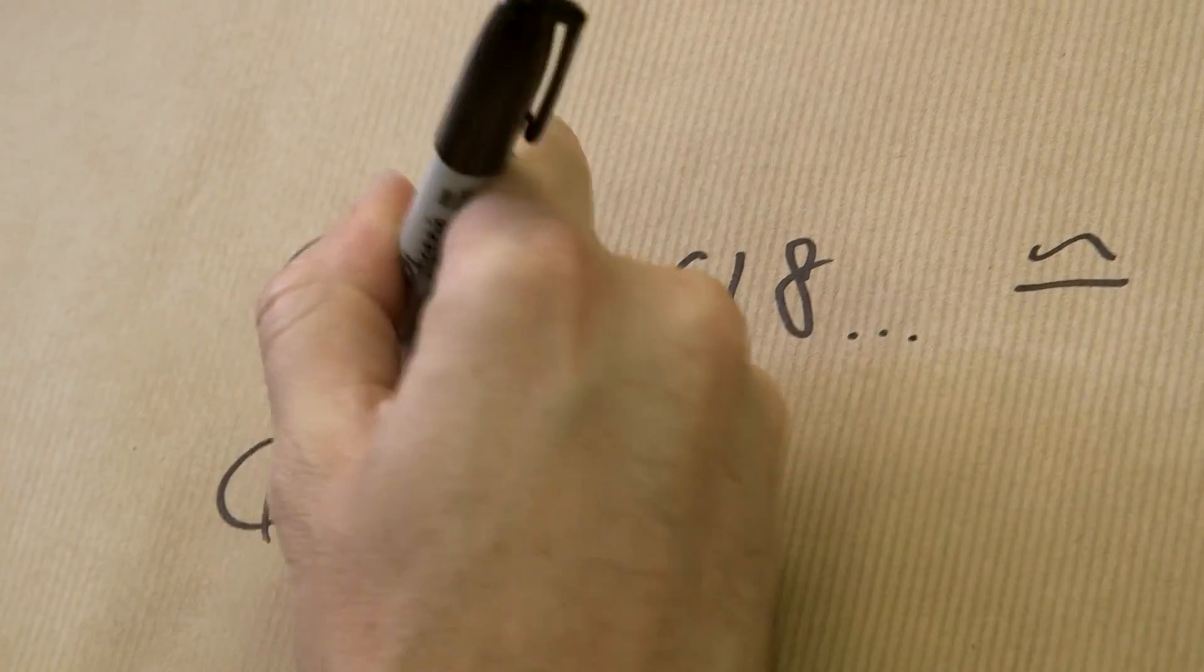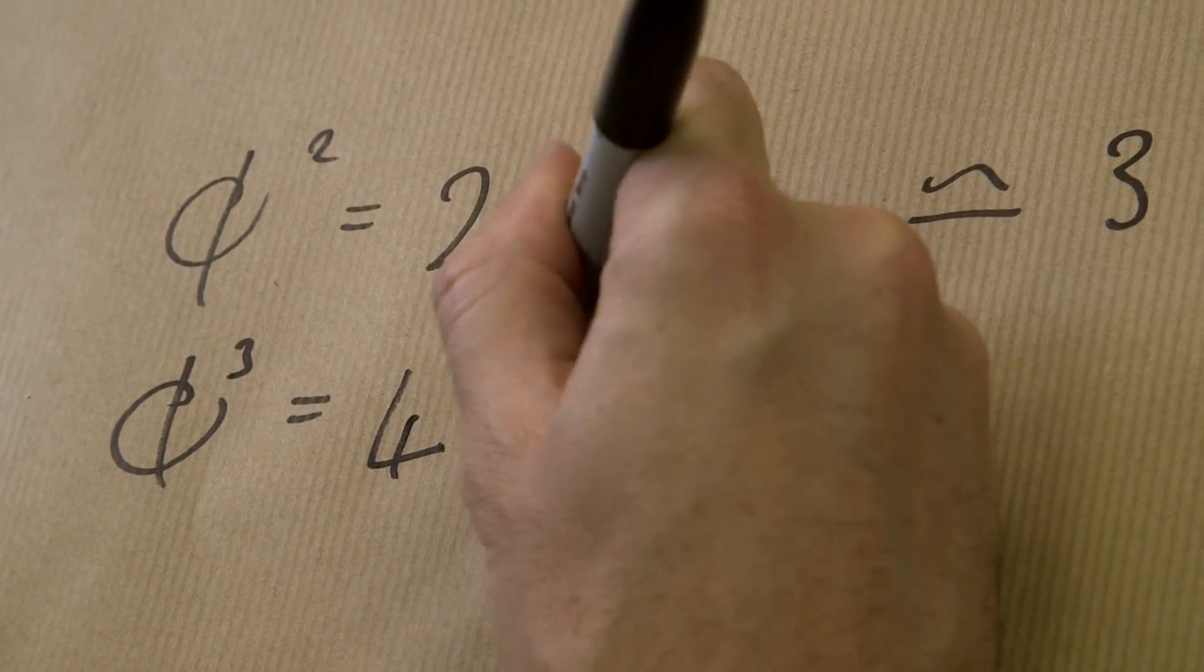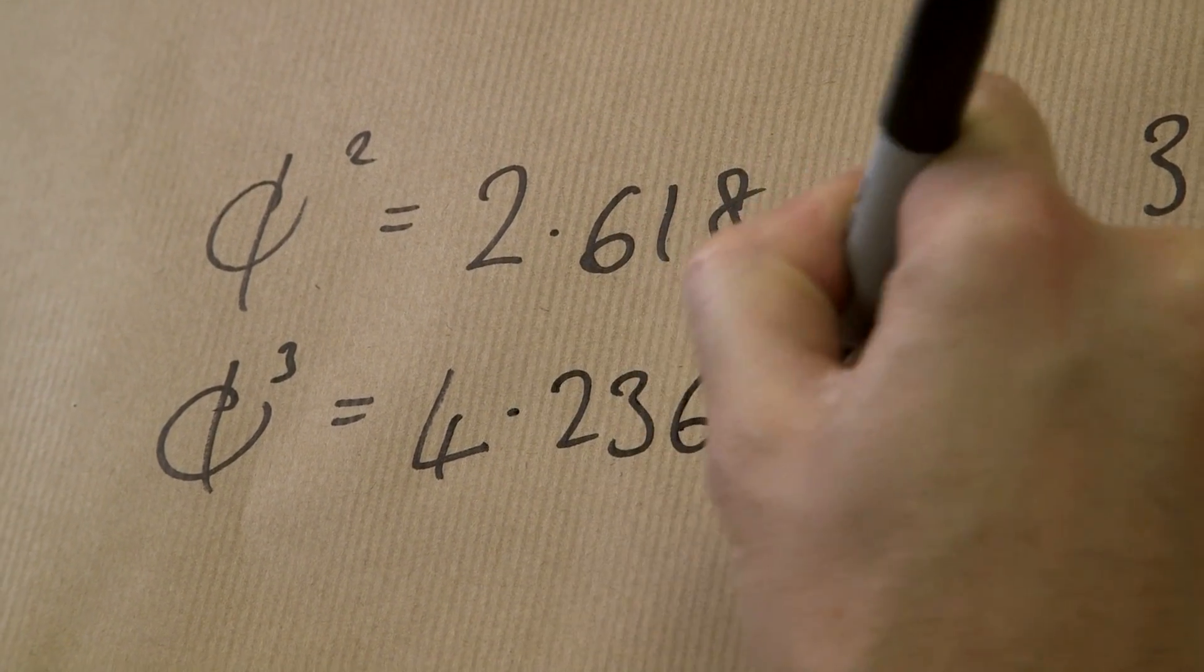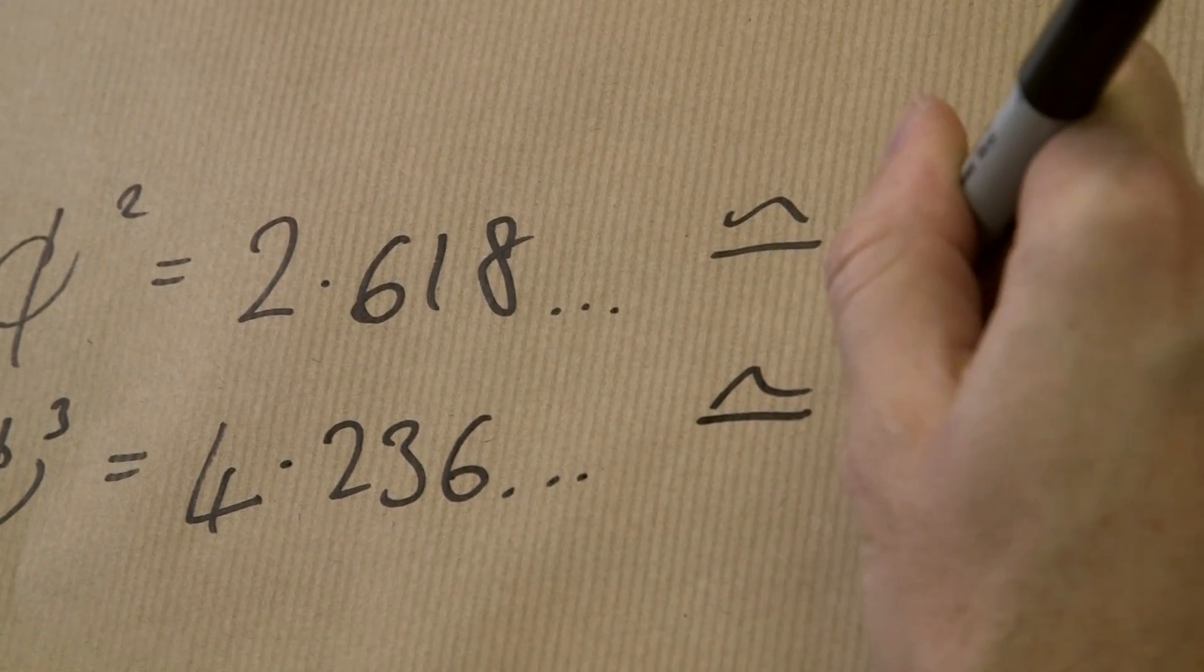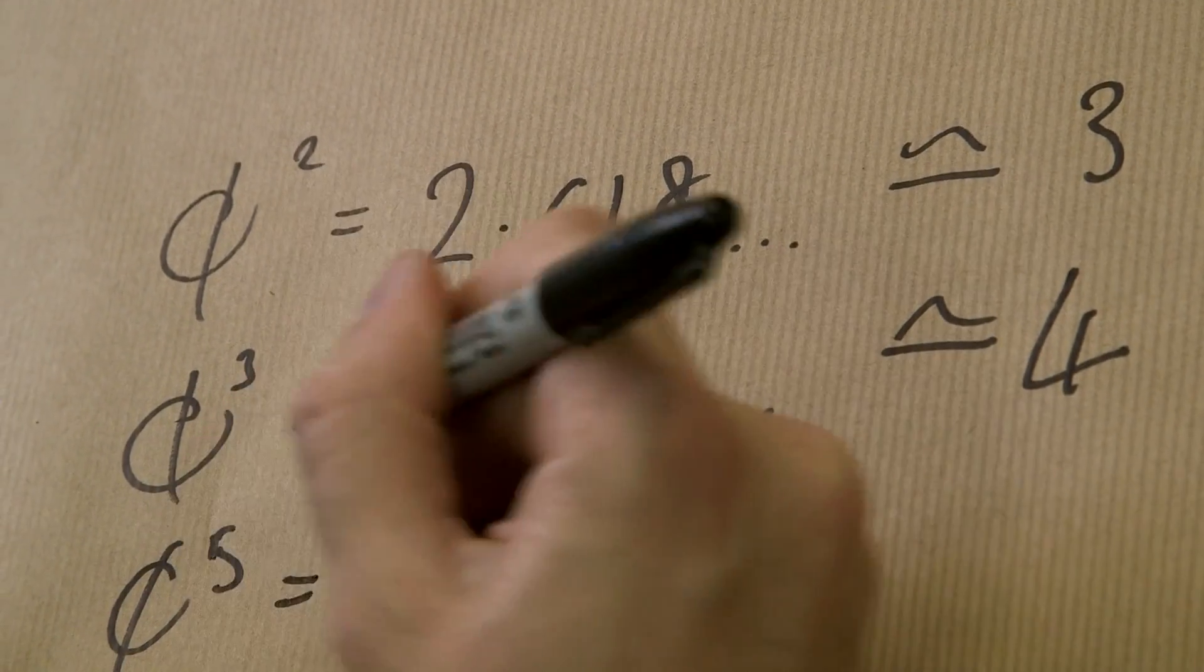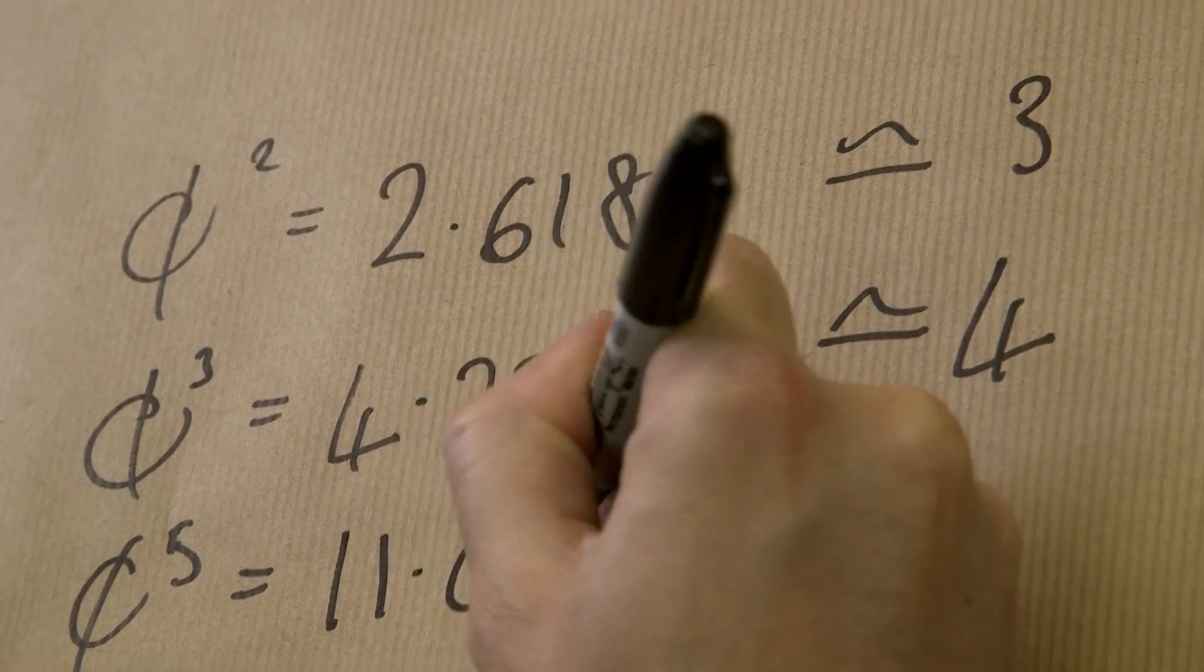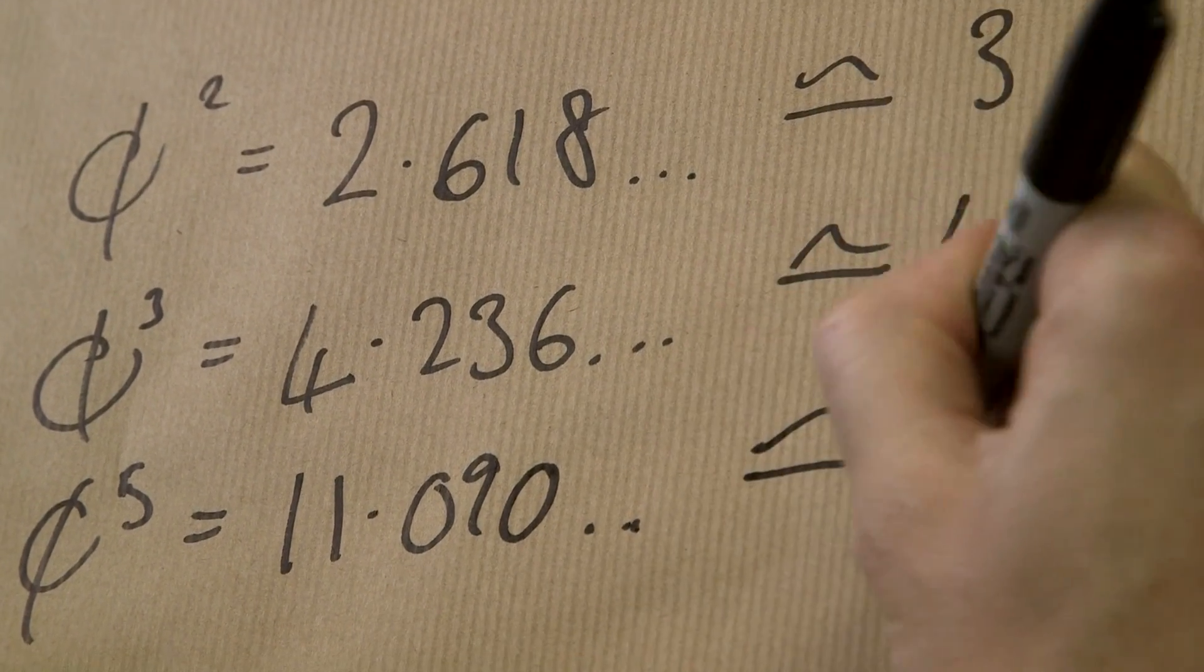And I'm not going to do all of them again this time, as you can see what's going on here. If you cube it, you get 4.236 dot dot dot, which, if you're going to the nearest whole number, is 4. And you go, that's looking familiar. 5, it equals 11.090 dot dot dot, which is approximately 11, right?